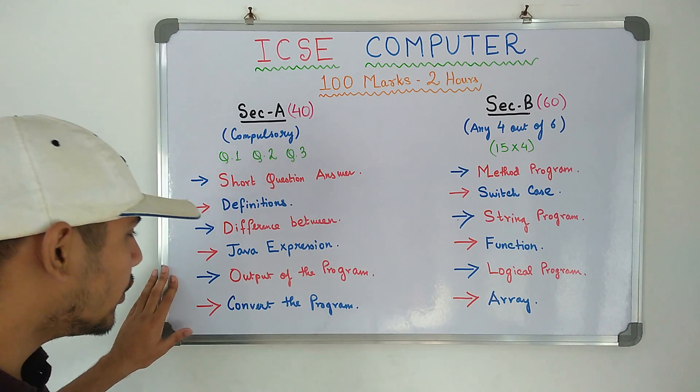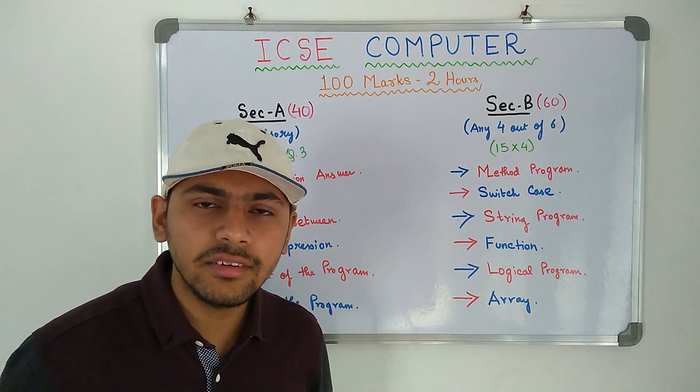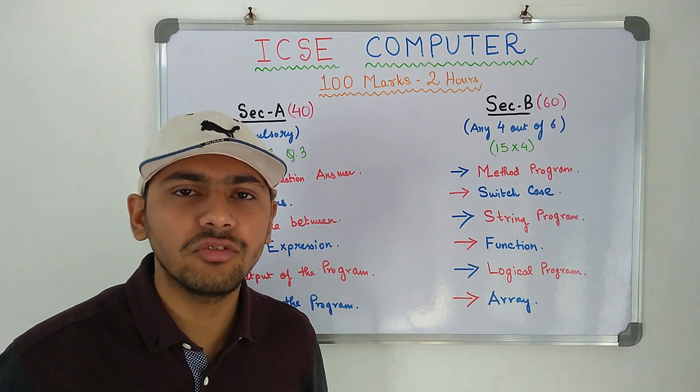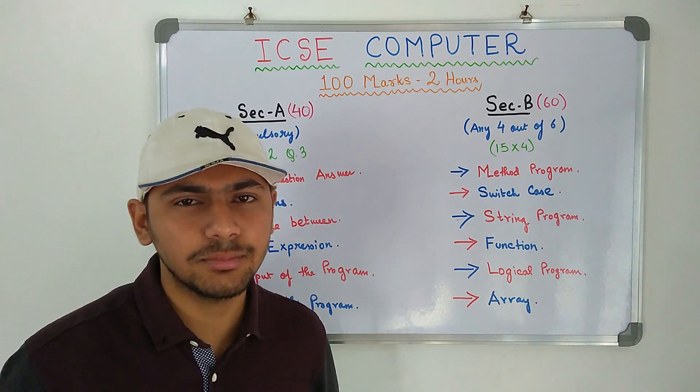Then you have output of the program. Small programs will be given and small segments of programs will be given and you have to give the output of the programs. It is pretty easy.